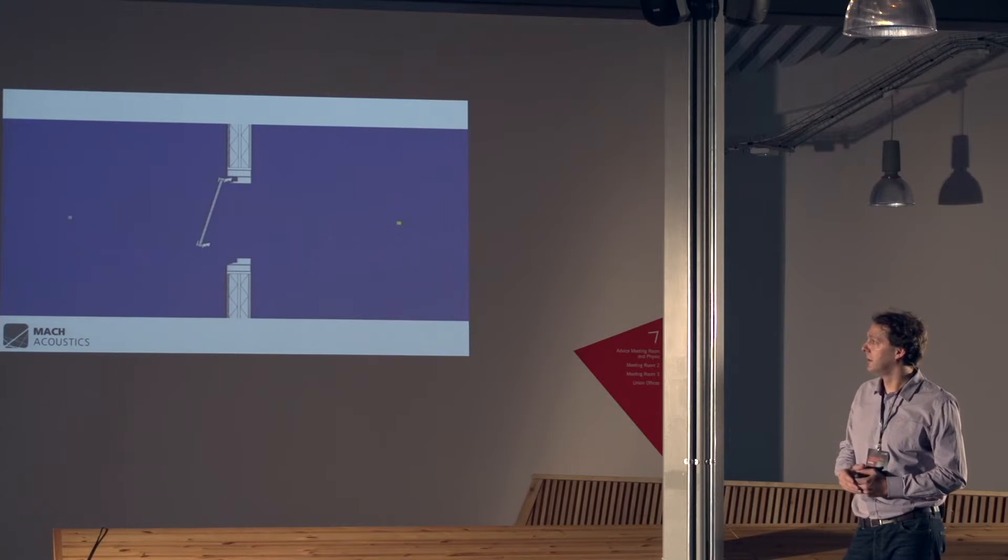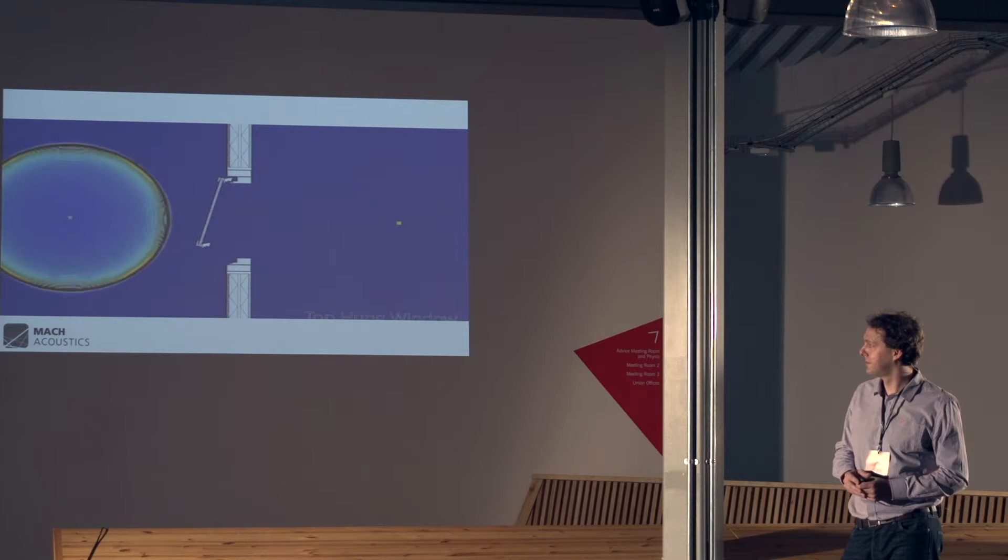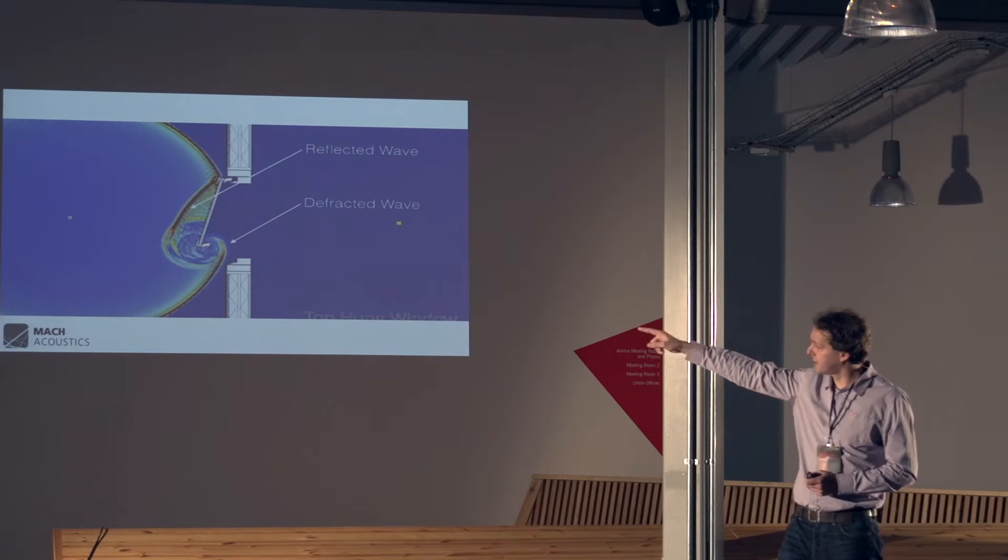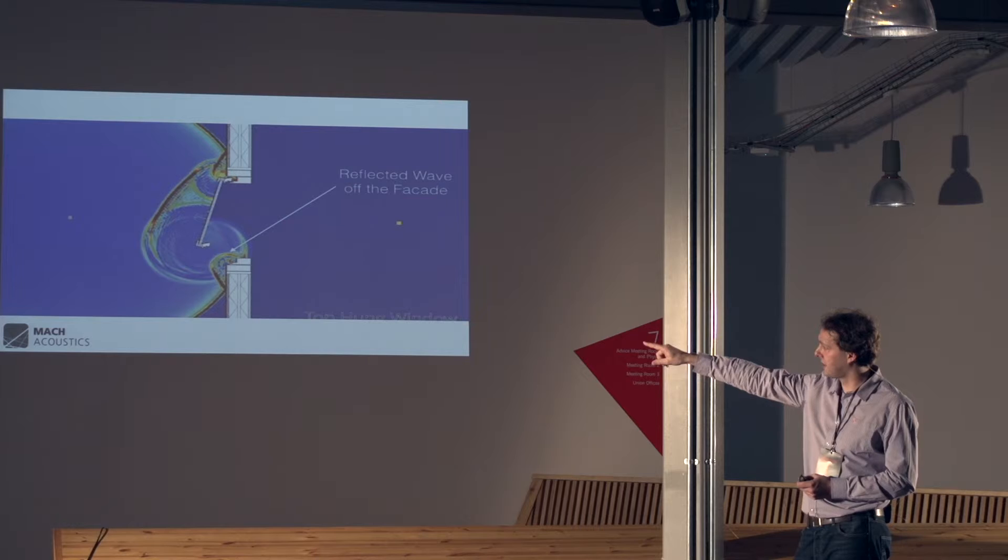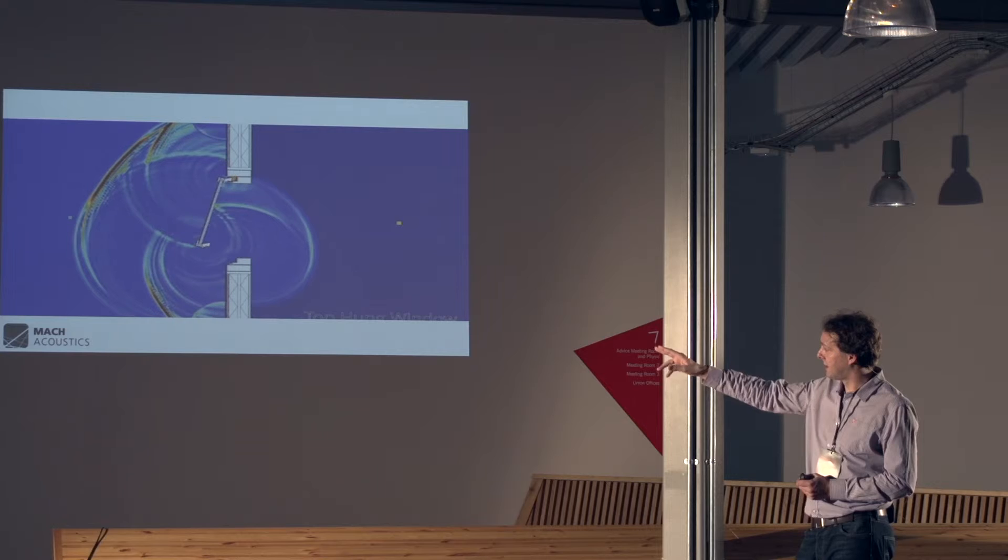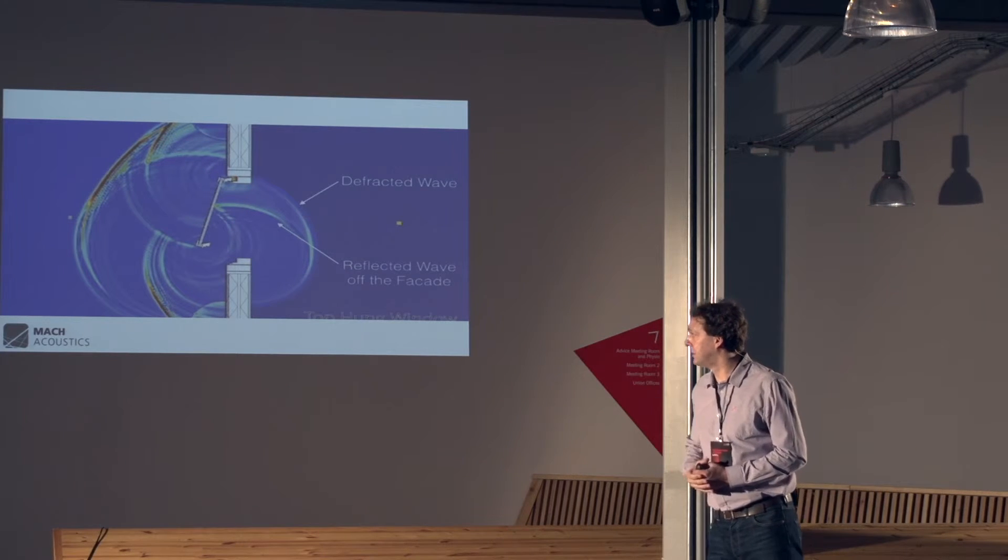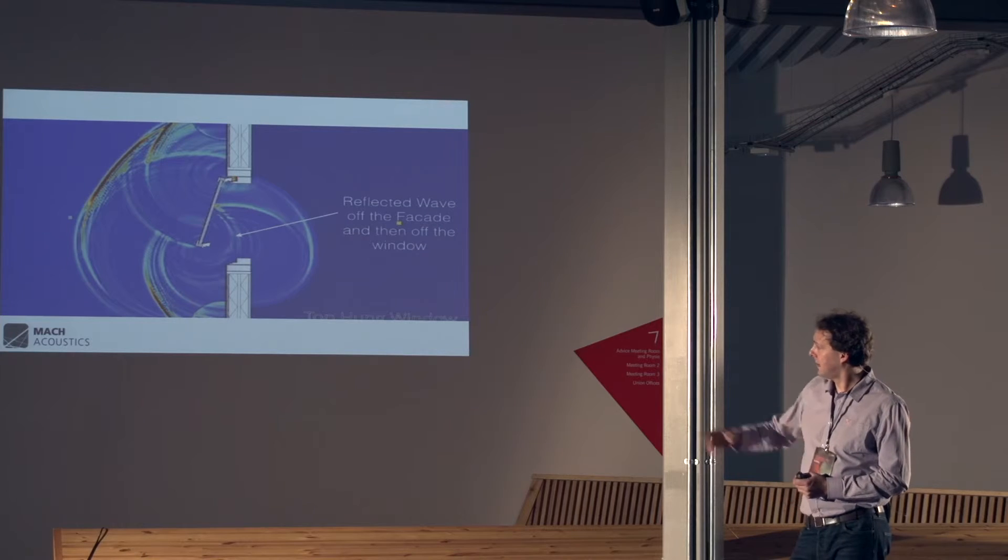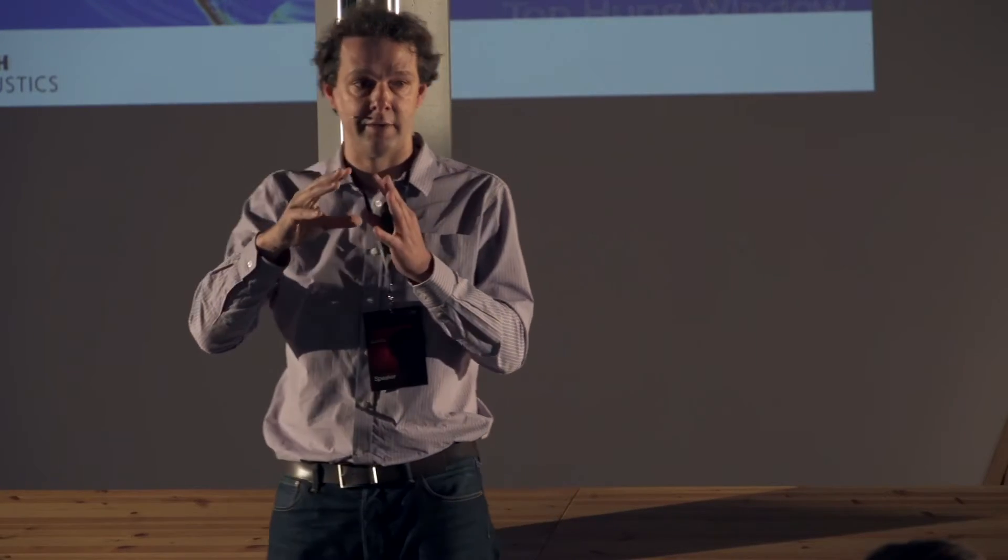If you now take a top hung window, we can see the difference. As you can see here, the sound is diffracting around the window coming in. It's reflecting off the facade at the bottom. And that is traveling back up, hits the window, and re-travels in. So now we have more than one wave coming into the building. And a second wave coming down. So if we treat those areas, we can start to control the amount of sound that comes into the building.